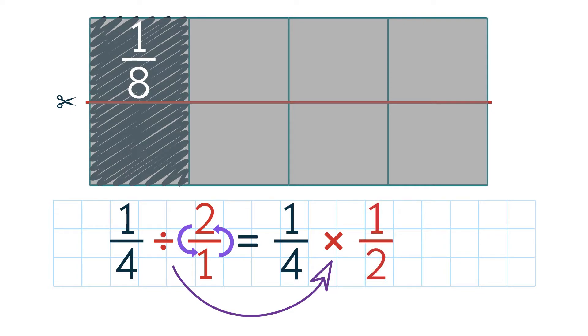Now we can multiply the fractions like usual. First, we multiply the numerators: 1 times 1 gives us 1. Next, we multiply the denominators: 4 times 2 equals 8. So 1 4th divided by 2 equals 1 8th.